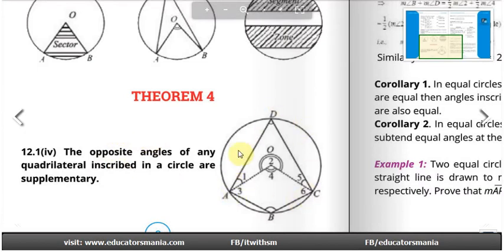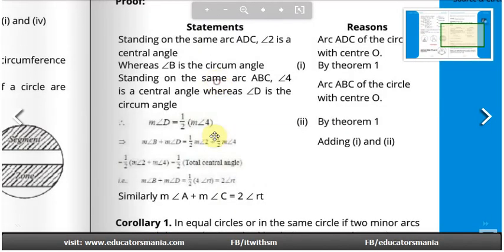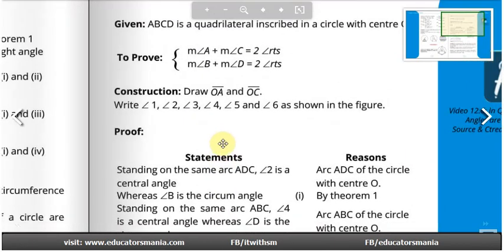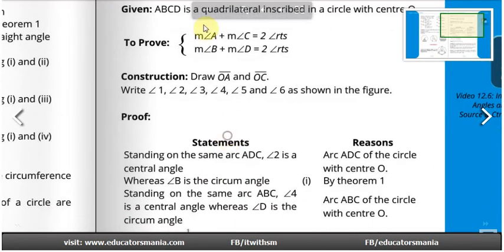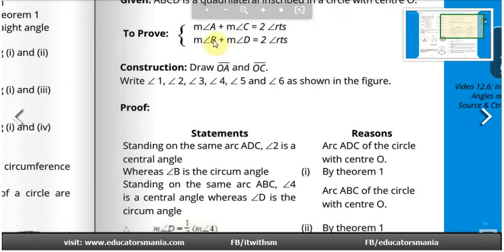We have a circle with center O, with quadrilateral ABCD inscribed in it. We have to prove that the opposite angles A and C sum to 180 degrees, that is, angle A plus angle C is equal to 2 right angles (2RT).